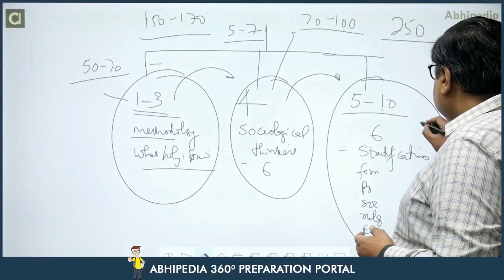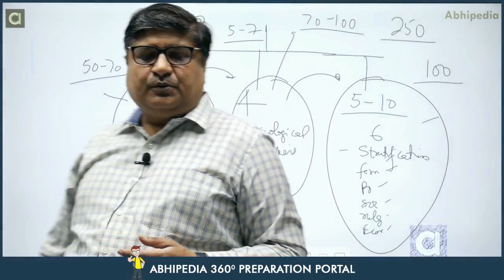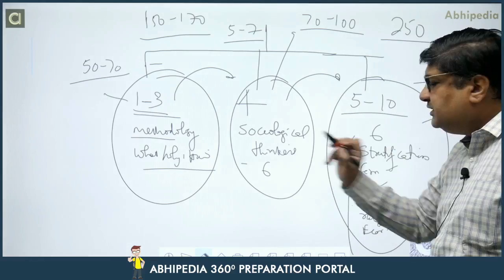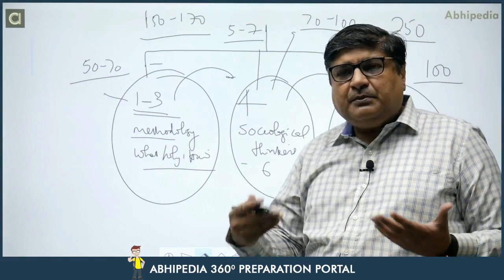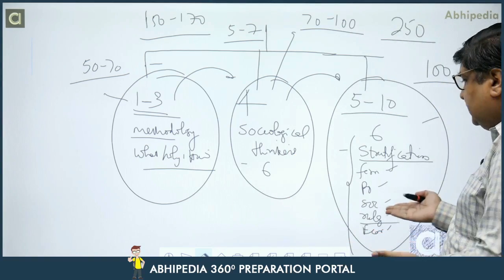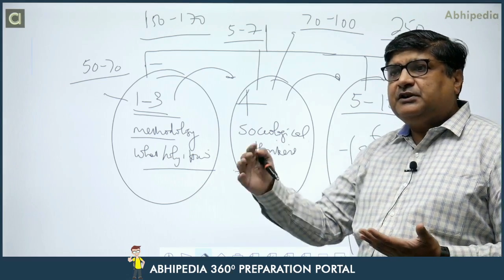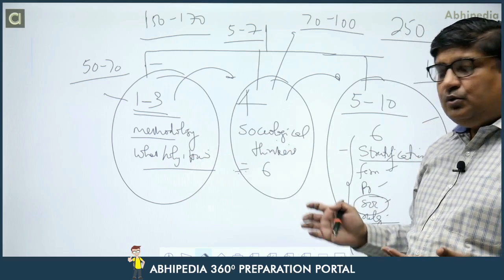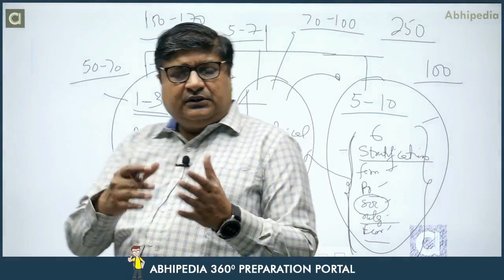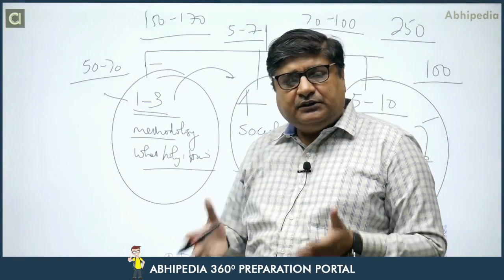The remaining stratification, family, religion sections account for around 80 to 100 marks. There is also an important overlap: questions from the thinkers appear in other sections too. For example, if asked about Marx's theory of stratification or Durkheim's views on religion, those questions come from thinkers but appear in section B. Similarly, Parsons' theory of social change and Marx's theory of change are asked in the social change chapter. If you review previous year papers, you will see how thinker questions appear across different sections.